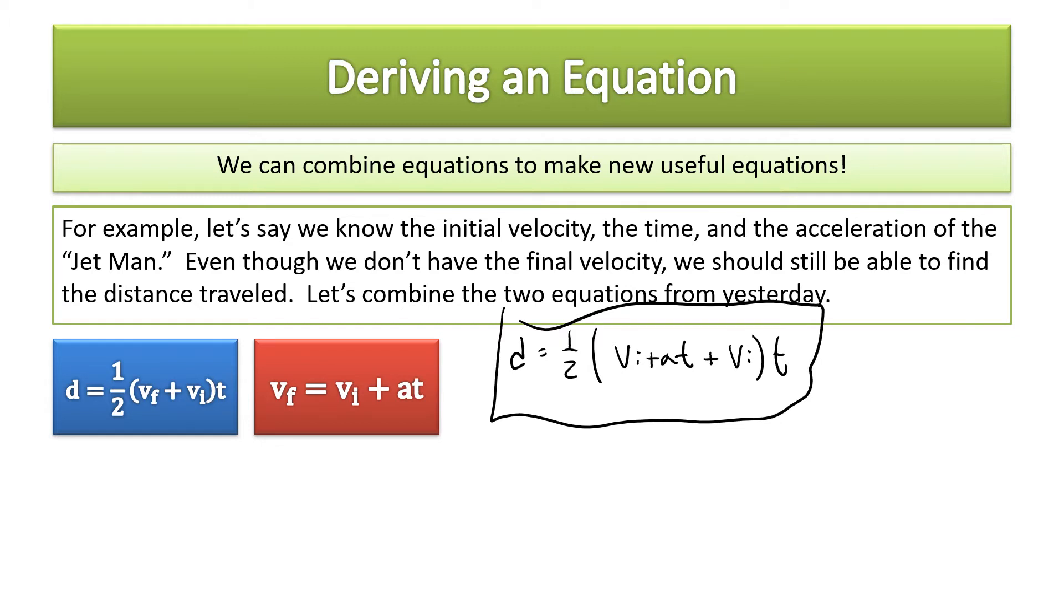But look how crazy this is—there's two separate t terms and two separate vi terms. We can definitely simplify this. We could say that d equals one half times (two vi plus at) times t. Now we have some distributing to do. We have to distribute the half and then we'll distribute the time.